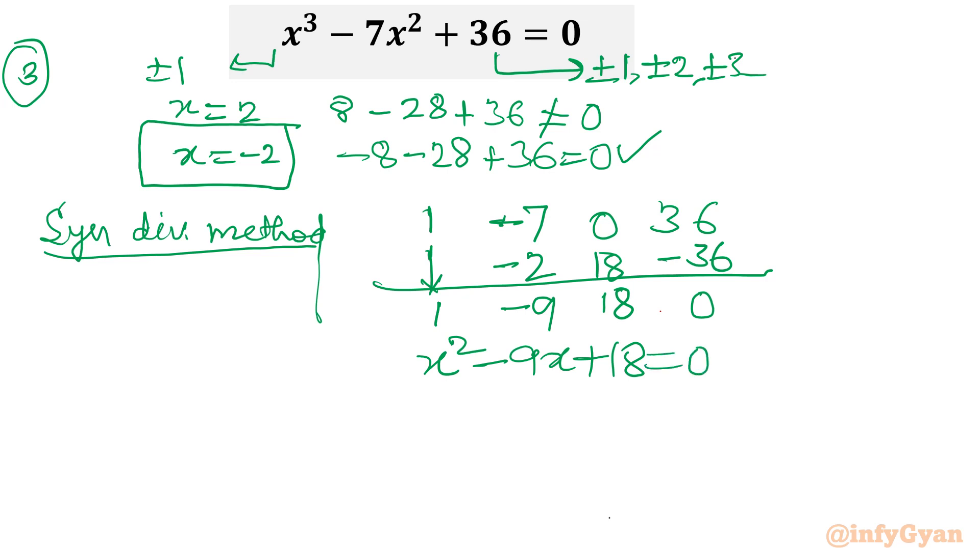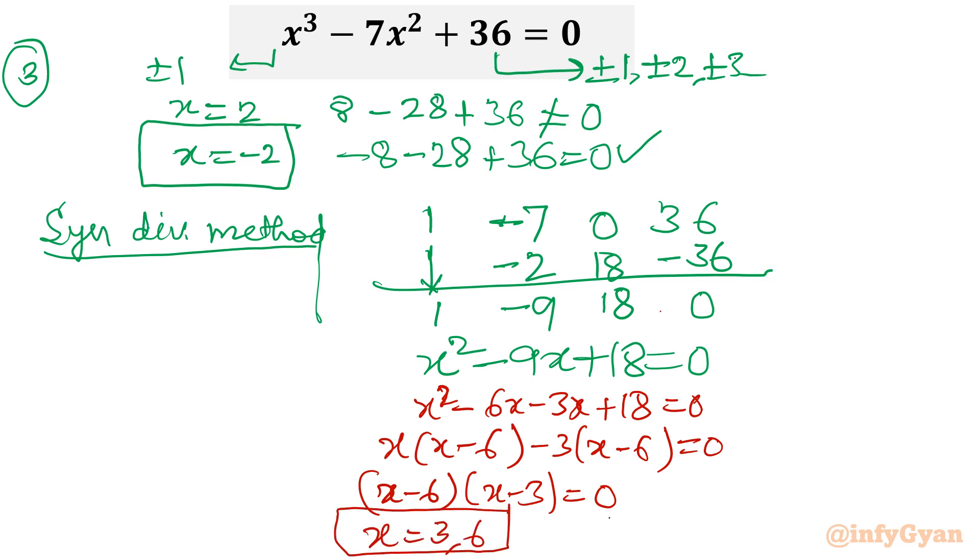Now I will split. You can apply the quadratic formula if you want. I'll write: x² - 6x - 3x + 18 = 0. Take x common: x(x - 6); -3 common: -3(x - 6) = 0. So (x - 6)(x - 3) = 0. x is 3 and 6. How quickly you can find the three solutions using synthetic division!